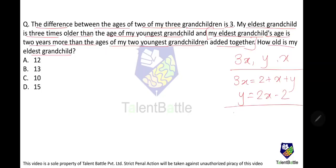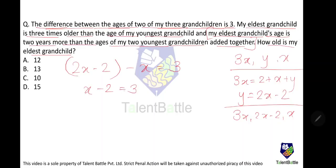So the ages of the three grandchildren are 3x, 2x minus 2, and x. Now the condition given is that the difference between the ages of two of the three grandchildren is three. Taking the difference between the middle and youngest: (2x - 2) - x = 3, so x minus 2 equals 3, giving x equals 5. Therefore the eldest grandchild is 5 × 3 = 15 years old.